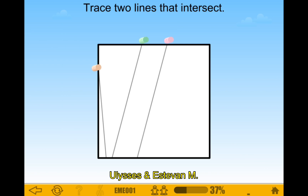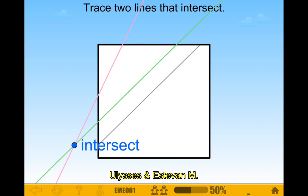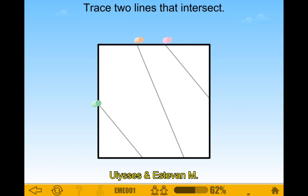Select two lines that intersect. Trace. Yeah, that's cool. Trace two lines that intersect — this one, this one. Because if you chose the green one and the other one, then that would have been parallel. So that would not be correct.